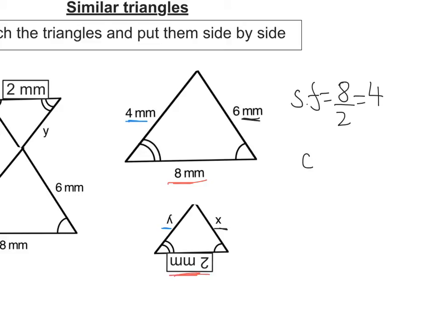To work out x, we take the corresponding side, which is 6 millimeters, and we divide that by our scale factor because we want to make it smaller. 6 divided by 4 is 1.5 millimeters. Let's do the same for y.